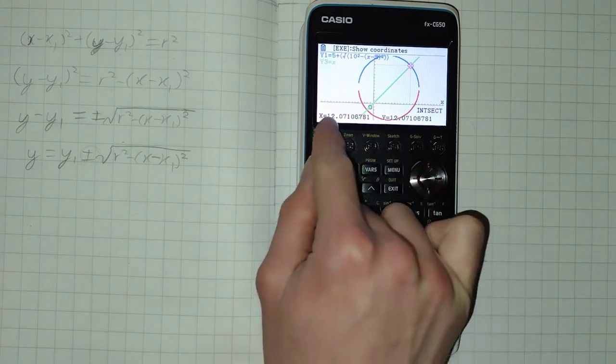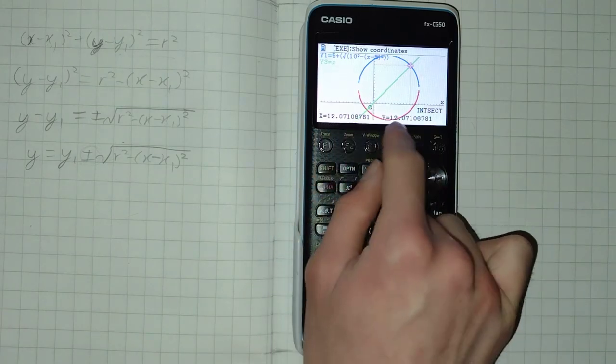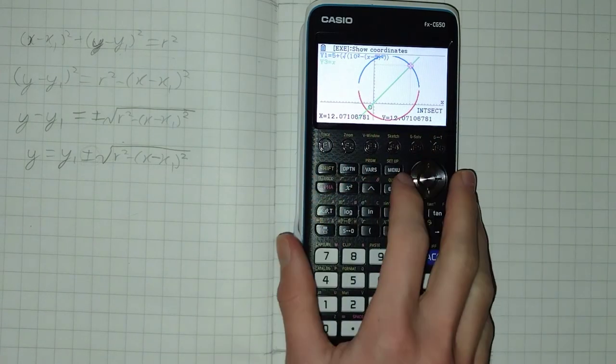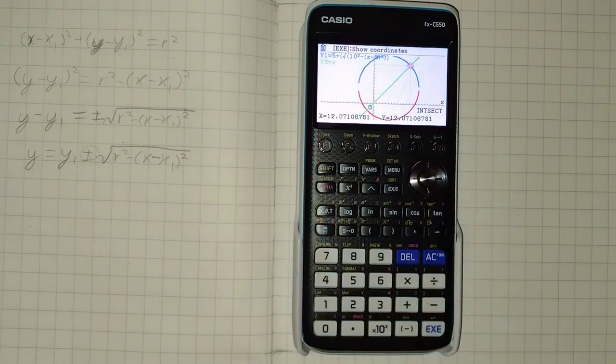And it will tell us that the intersection point is 12 point... Okay, I hope you found this useful. Thank you and I'll see you soon.